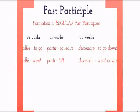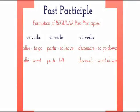Next, I'll explain the past participle. For regular verbs, one forms the past participle with a simple adjustment to the infinitive. Aller would be allé, meaning 'went.' Partir would be parti, meaning 'left.' And descendre would be descendu, meaning 'went down.'